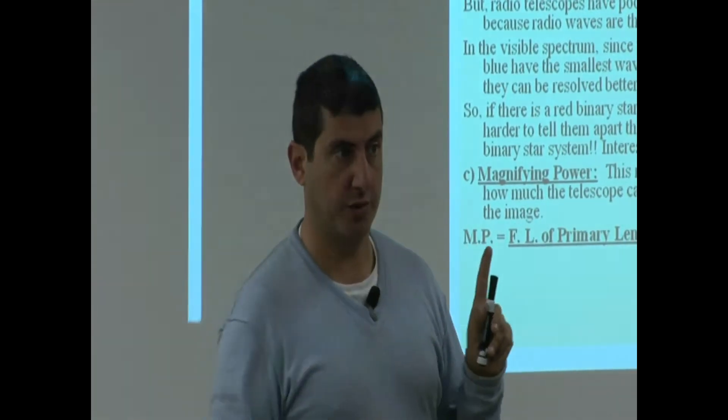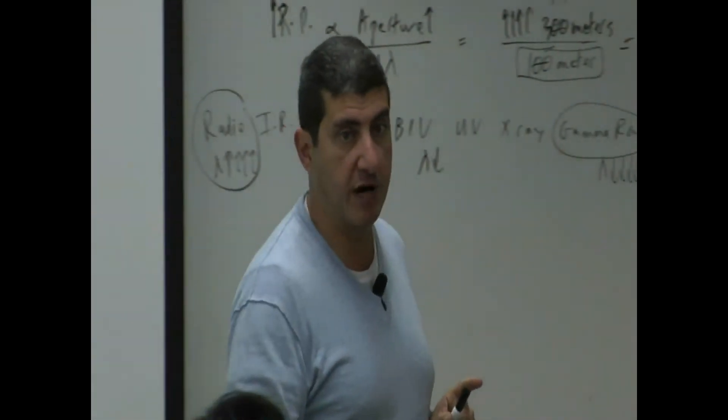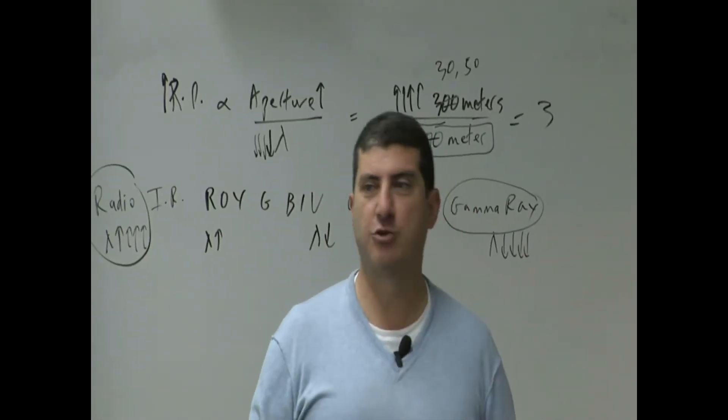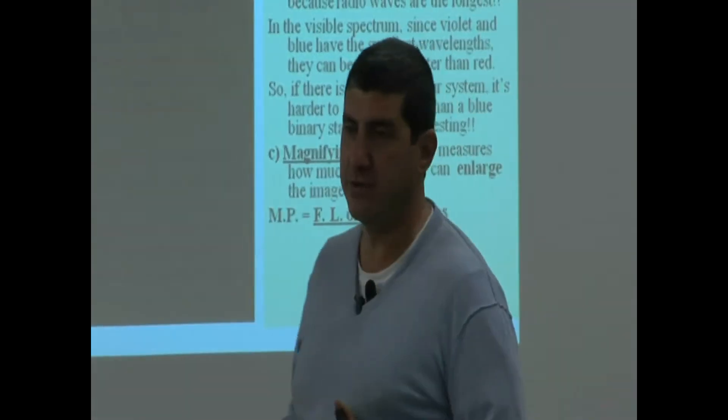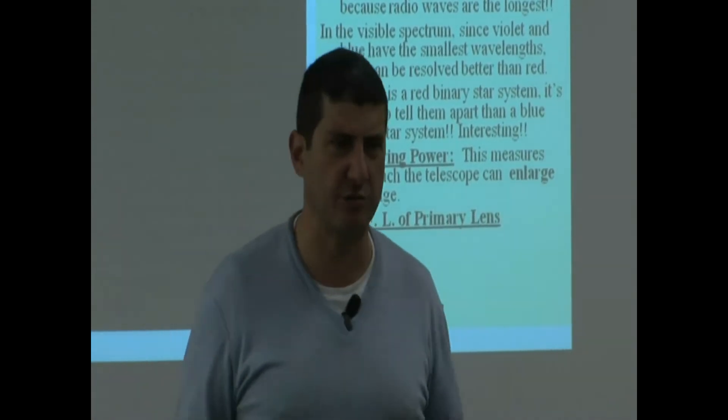It's not like a microscope. A microscope, you want big magnification power for a microscope, because you're trying to put an ant in there or a leaf in there. You're trying to tell the cell structure of the leaf. So you want microscopes 10,000 magnification power, 20,000 magnification power.